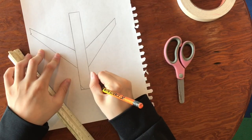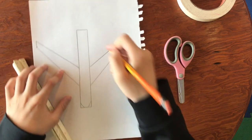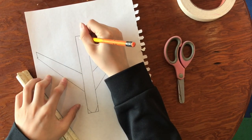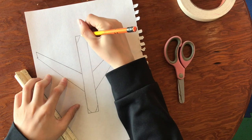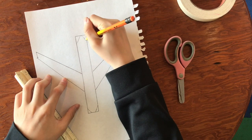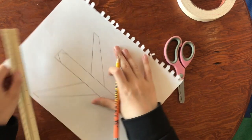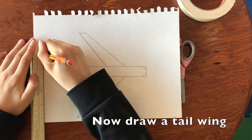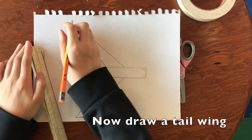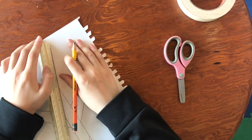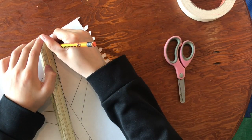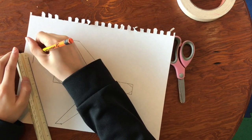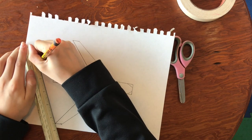Now draw the shape of the head, a little round. And then the tail is like a little point here. Now draw the tail wing for the airplane. It doesn't have to be that big.